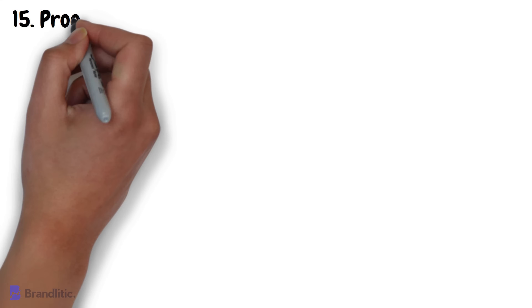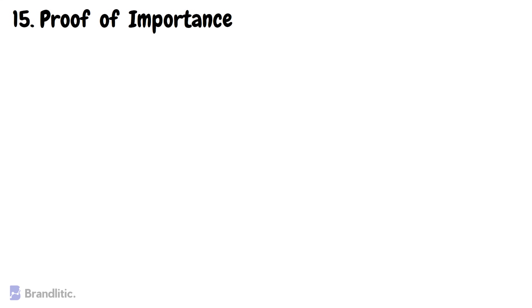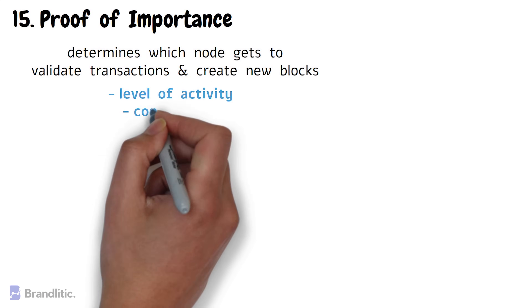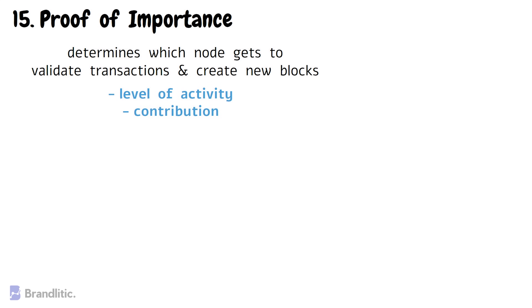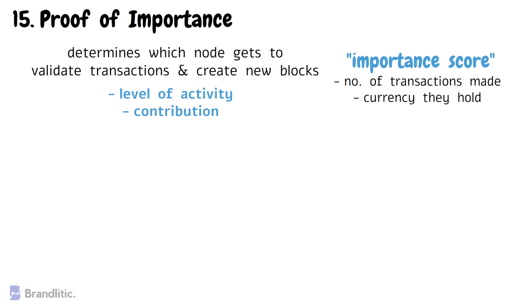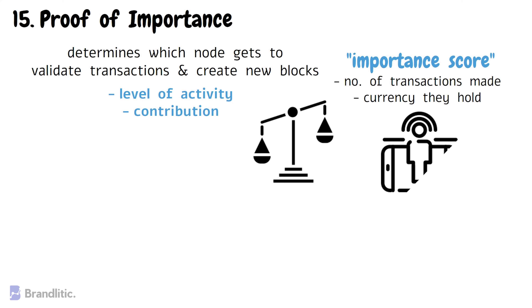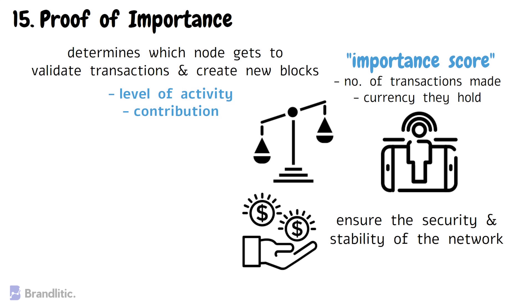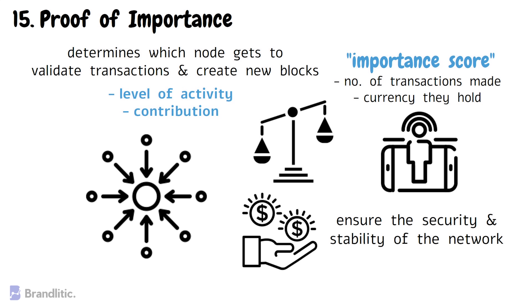Number fifteen: Proof of Importance. This consensus algorithm determines which node gets to validate transactions and create new blocks based on their level of activity and contribution to the network. This activity is measured by a user's importance score, which is calculated based on the number of transactions they have made and the amount of currency they hold. Nodes with a high importance score are more likely to be chosen to validate transactions, incentivizing users to actively participate and maintain a stake in the currency. However, it can also make the network more centralized, as users with a large amount of currency may have more influence over the network than smaller users.